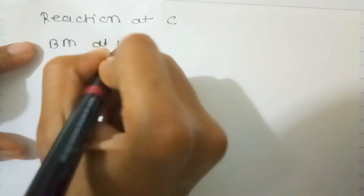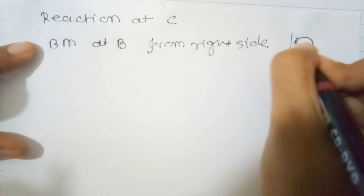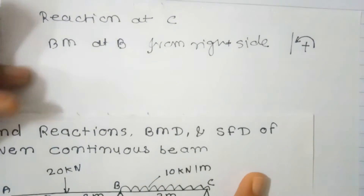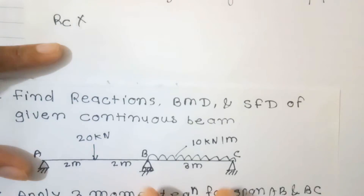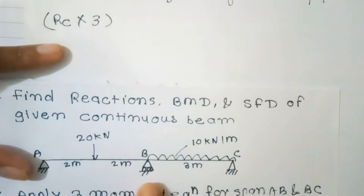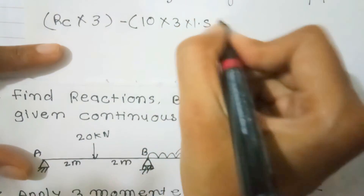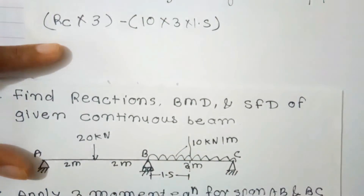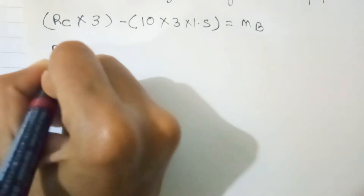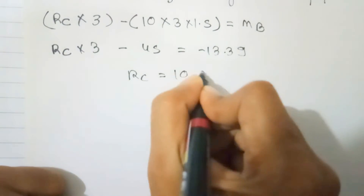To find RC, consider bending moment at B from the right side, taking anticlockwise as positive. RC acts anticlockwise about B (positive), at a distance of 3 m. The UDL of 10 kN/m over 3 m acts at 1.5 m from B (anticlockwise, negative). The equation is: RC × 3 − 10 × 3 × 1.5 = MB = −13.39. Therefore RC × 3 − 45 = −13.39, giving RC = 10.54 kN.